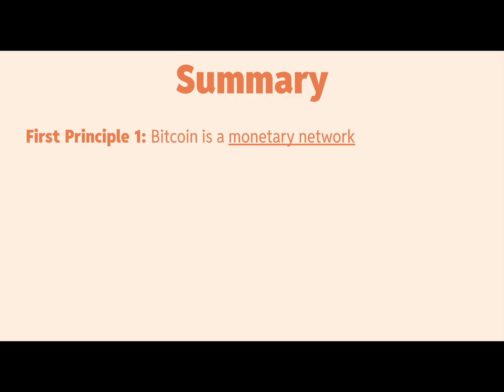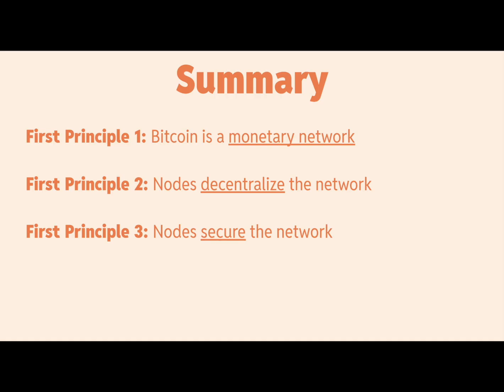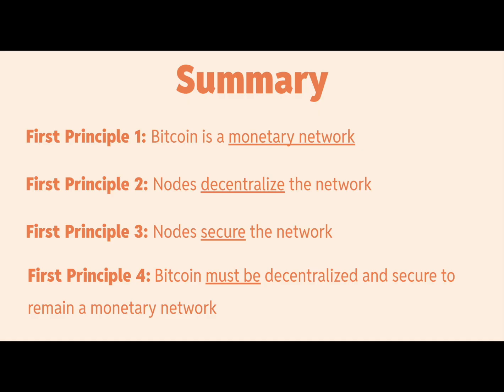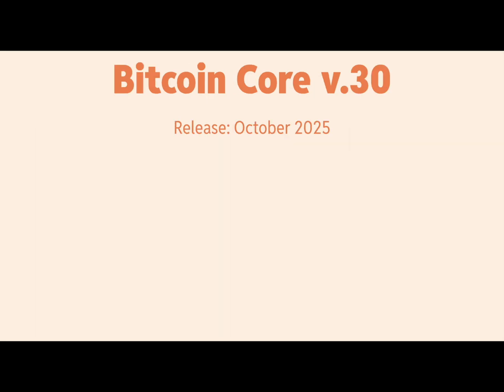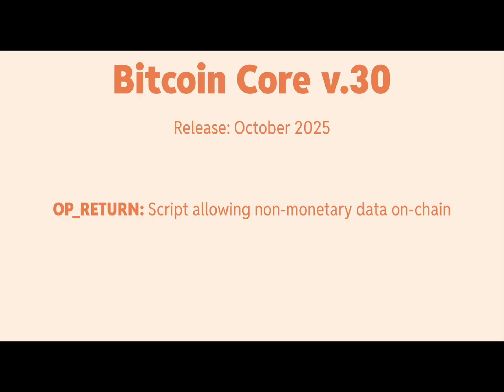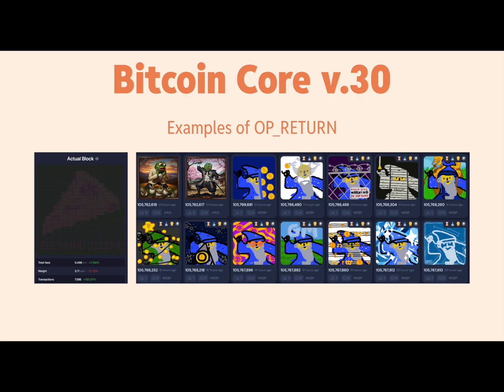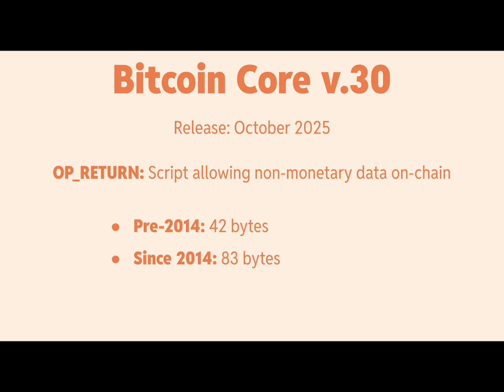I chose Jeff Booth because he's one of the deepest first-principles thinkers in Bitcoin and he often brings up decentralization and security as necessary to Bitcoin's success. So to summarize our four first principles: one, Bitcoin is a monetary network; two, nodes decentralize the network; three, nodes secure the network; four, Bitcoin must be decentralized and secure to remain a monetary network. Now let's look at what Bitcoin Core version 30 is doing versus Bitcoin Knots.